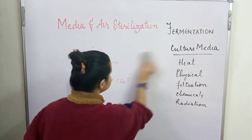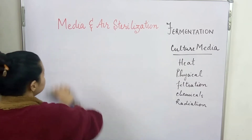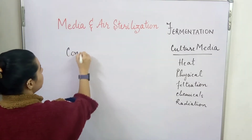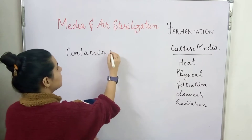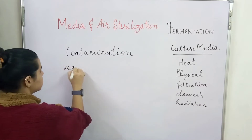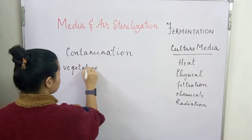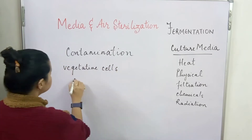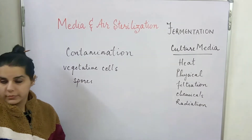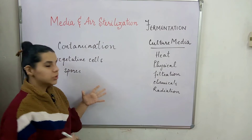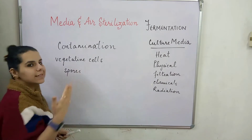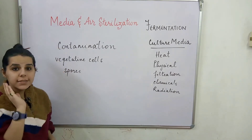If we talk about heat treatment, most of the contamination in media comes from either vegetative cells or spores of microorganisms. Vegetative cells are easy to destroy, whereas spores are very sturdy and difficult to destroy.